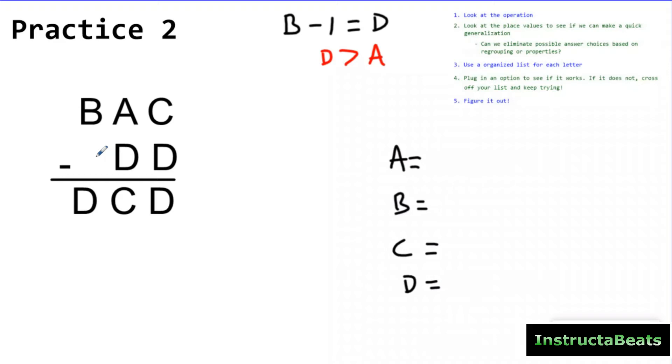Now, some of you may have come up with other generalizations. I don't see anything else that I could do. So I've already looked at the operation. I've looked at the place values. I made some generalizations and I have eliminated some possibilities. Not a lot, not as many as we did the first one. But now I need to make my organized list.